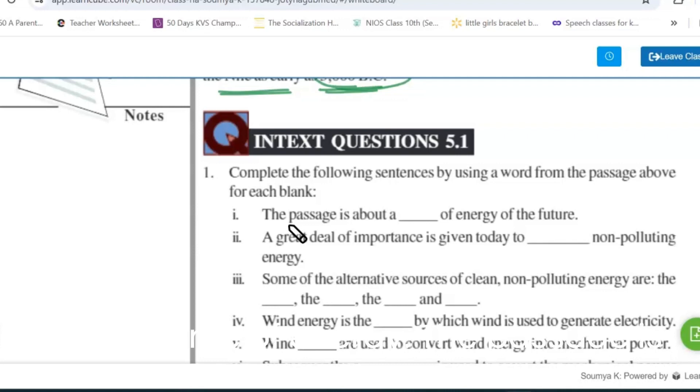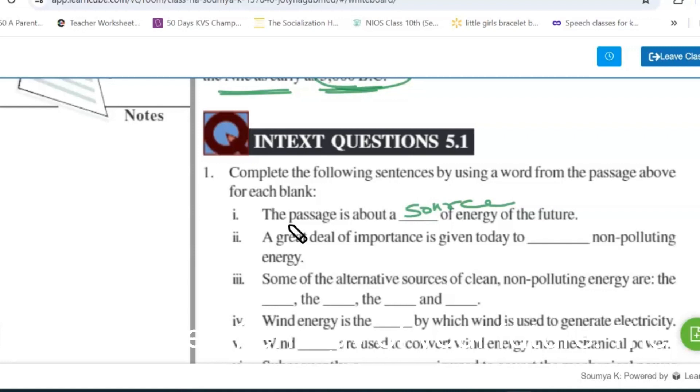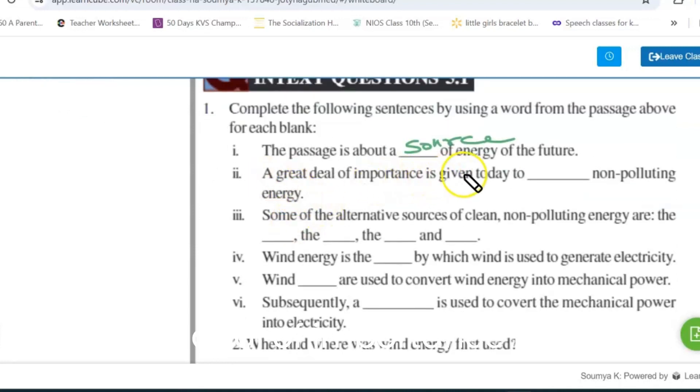It's a source of energy. The passage is about many sources of energy, and in that we are learning about the wind as the source of energy of your future. A great deal of importance is given today to blank non-polluting energy - it's clean, clean non-polluting energy.